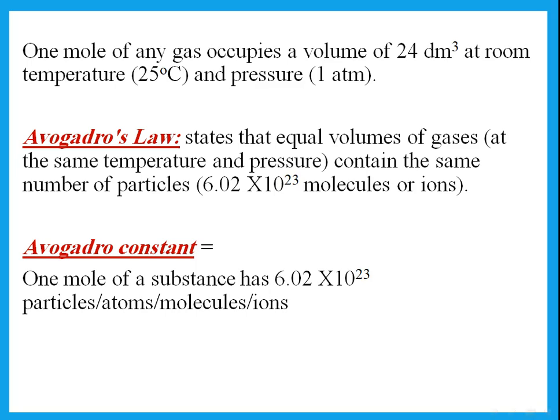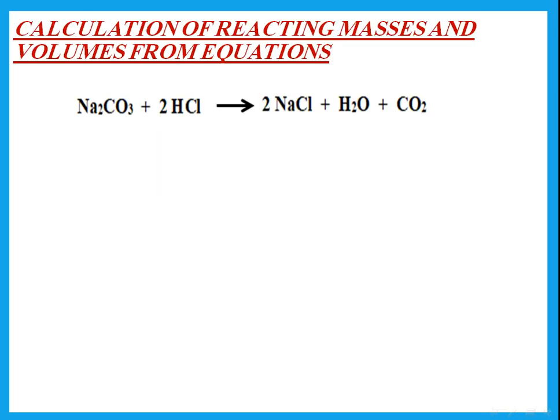One mole of any gas occupies a volume of 24 dm³, which is why n = volume ÷ 24 for gases. Avogadro's law states that equal volumes of gases contain the same number of particles. One mole of any substance contains 6.02 × 10²³ atoms, molecules, or ions — a very large number.